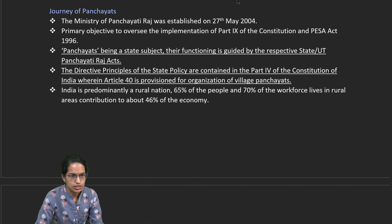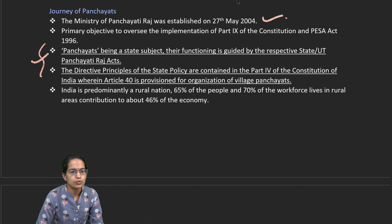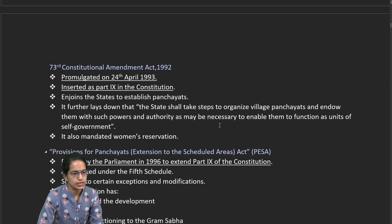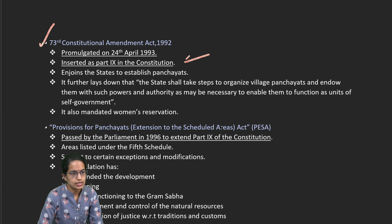The Panchayati Raj Ministry was established in 2004. Panchayat is a state subject guided by the various acts under the Panchayati Raj Act. Article 40 provisions for the organization of village panchayats. India has a predominant rural economy where 70% of the workforce lives in rural areas, making the development and strengthening of Panchayati Raj important. Under the 73rd Constitutional Amendment Act, the Panchayati Raj systems were inserted and states were directed to establish panchayats.